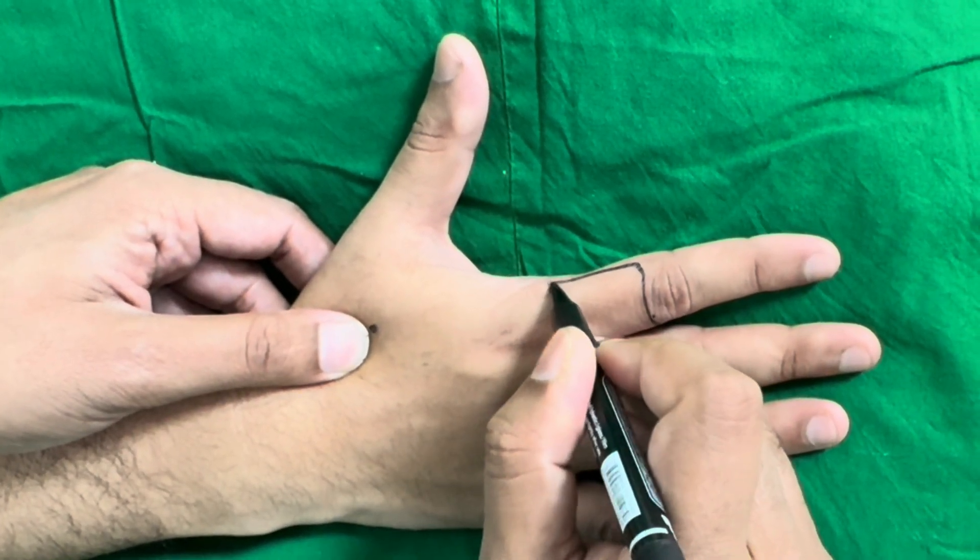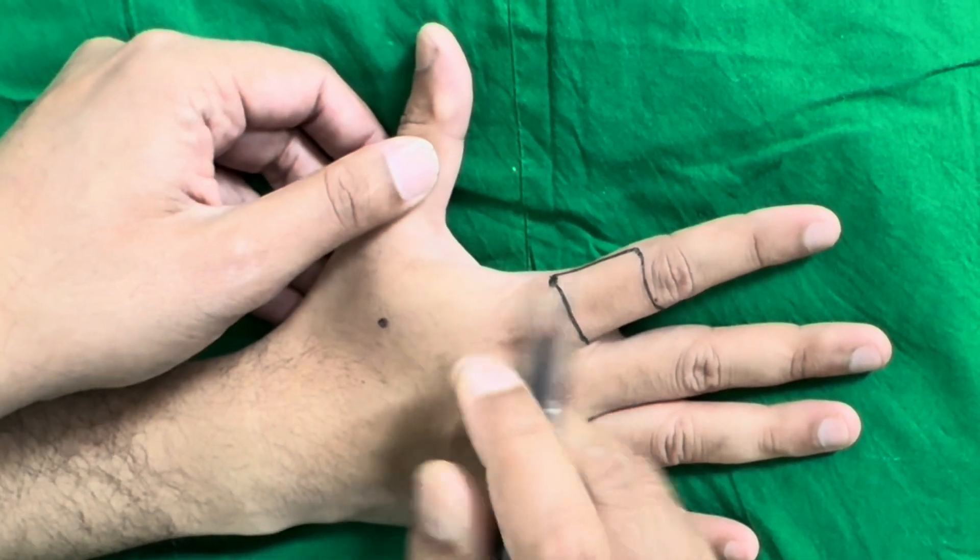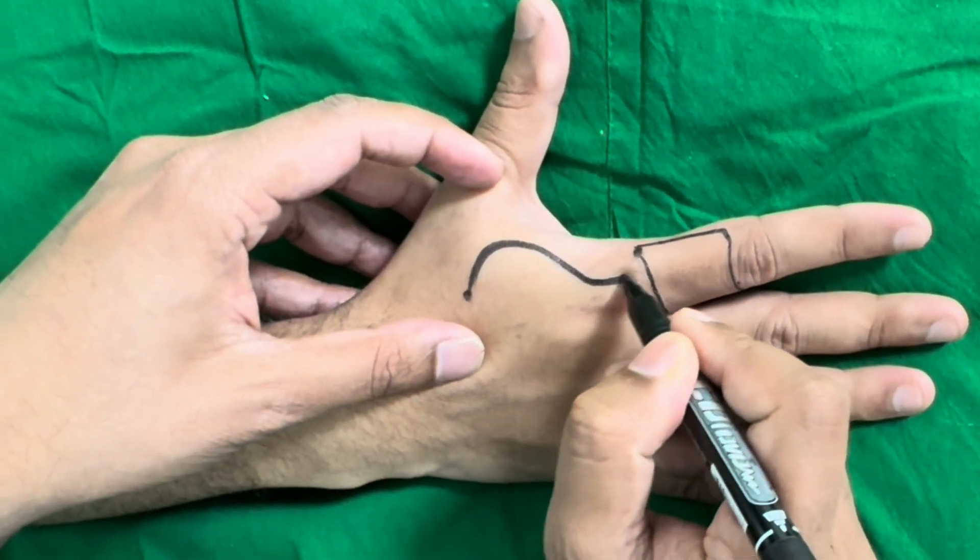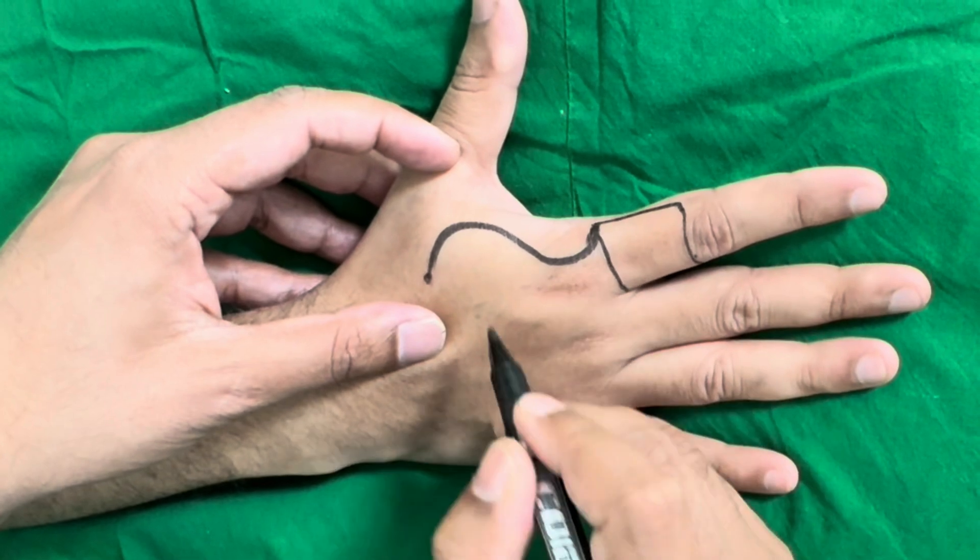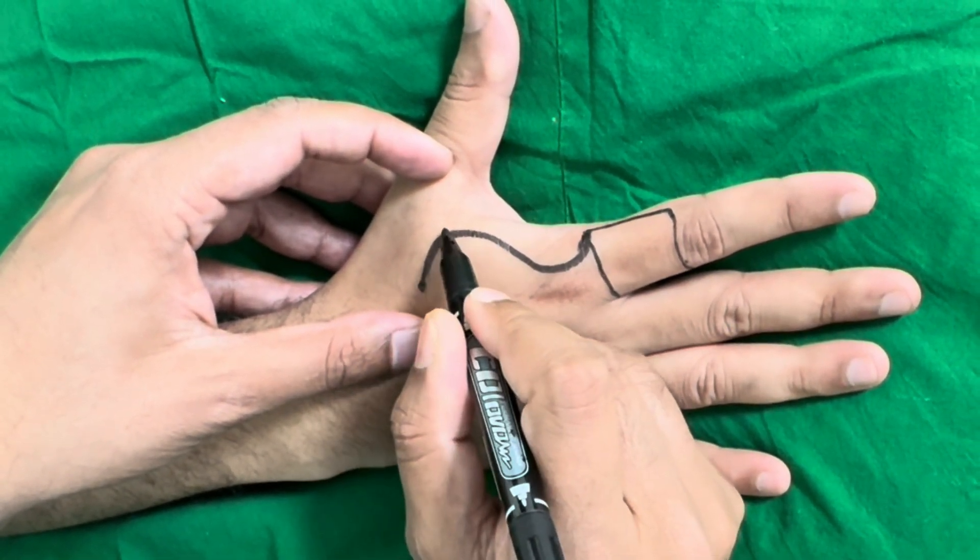You mark a lazy S line connecting these two points. The convexity of the distal line is towards the second metacarpal, and the convexity of the proximal line is towards the first metacarpal.